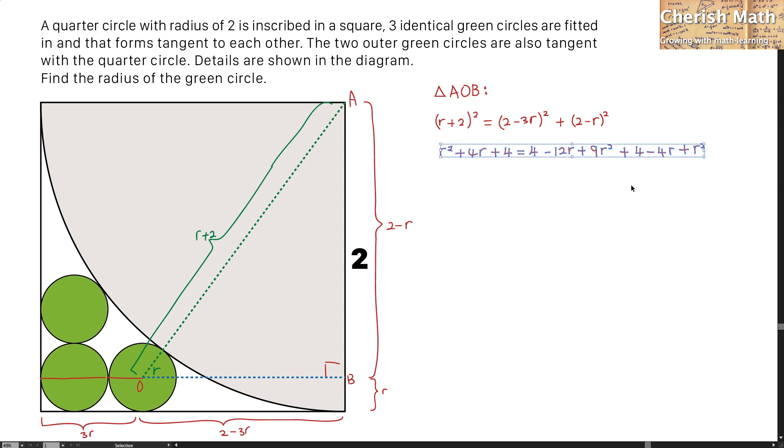By expanding it, I am getting this. Now, I am going to rearrange the whole thing to make it 9r squared minus 20r plus 4 equal to 0 to factorize it.